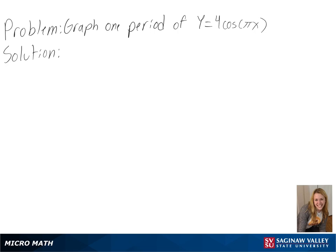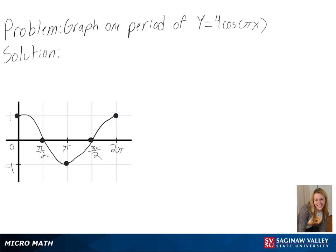Our problem is to graph one period of y equals 4 cosine of pi x. We can look at an original graph of y equals cosine of x to see how ours will be changing.